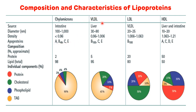Apolipoproteins present in VLDL are ApoB100, ApoC, and ApoE. Apolipoproteins present in LDL is ApoB100, and apolipoproteins present in HDL are ApoA, ApoC, ApoD, and ApoE. LDL contains only a single apoprotein, that is ApoB100, while other lipoproteins contain multiple apolipoproteins.